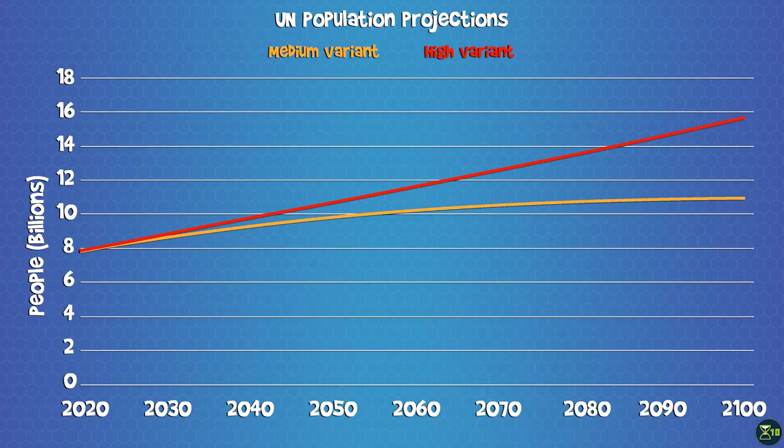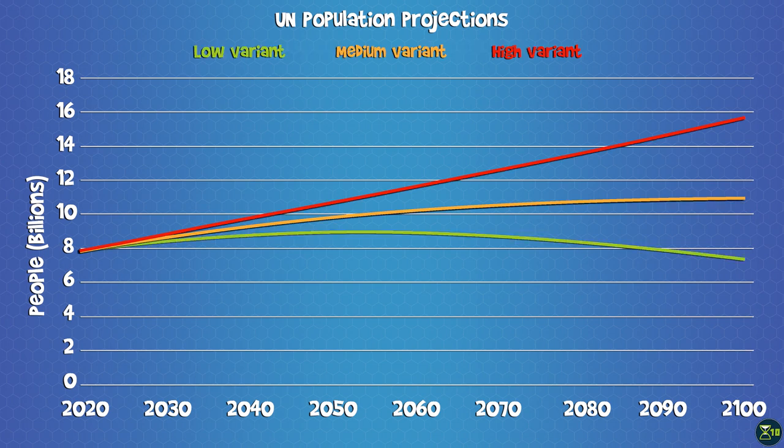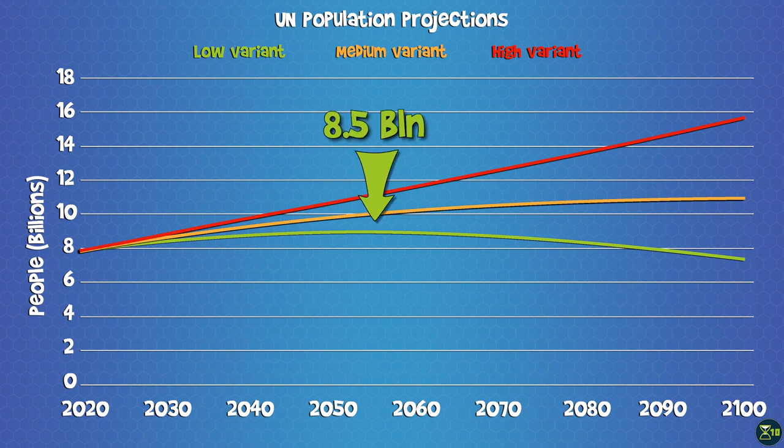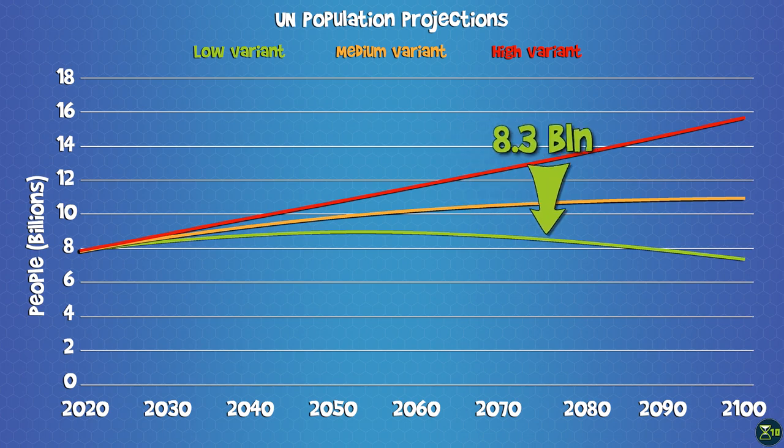In the high variance scenario, by 2100, we are supposed to hit almost 16 billion. That's about 5 billion more than what the medium variance scenario predicts. In the low variance scenario, population growth will slow down much more dramatically than in the medium variance one. Our population will hit a peak of about 8.5 billion people in the mid-2050s and then slowly decline to just above 7 billion in 2100.